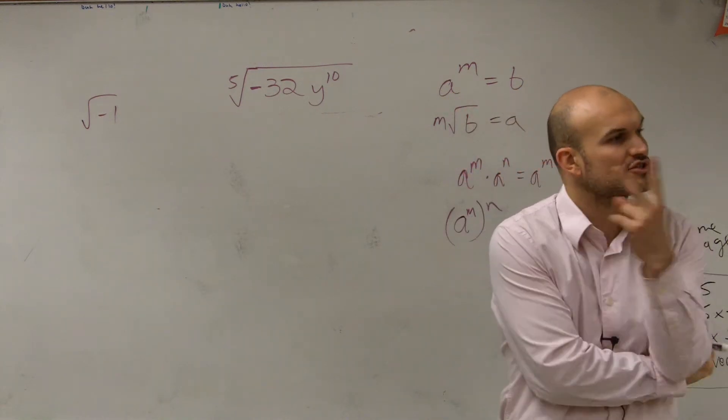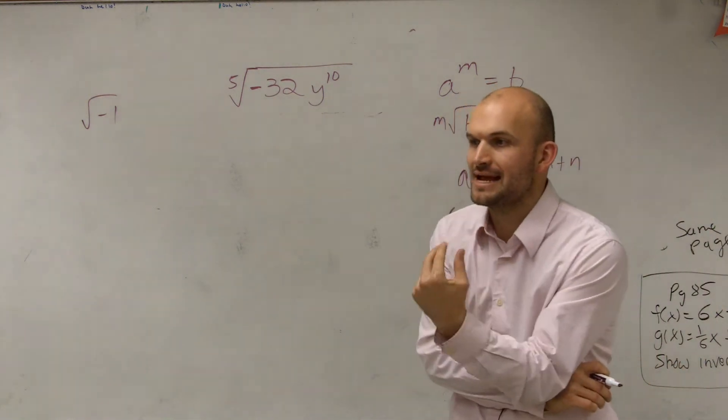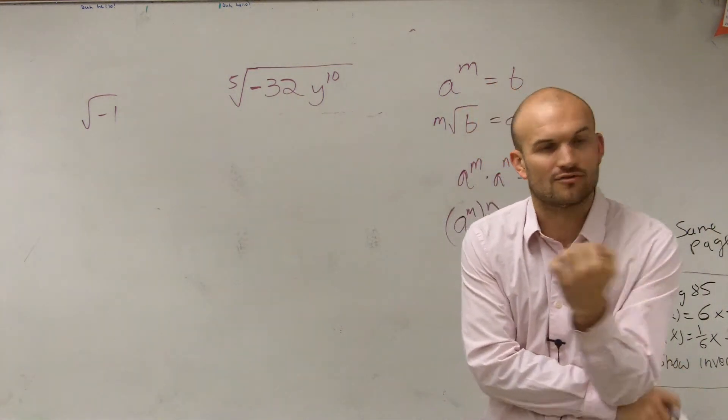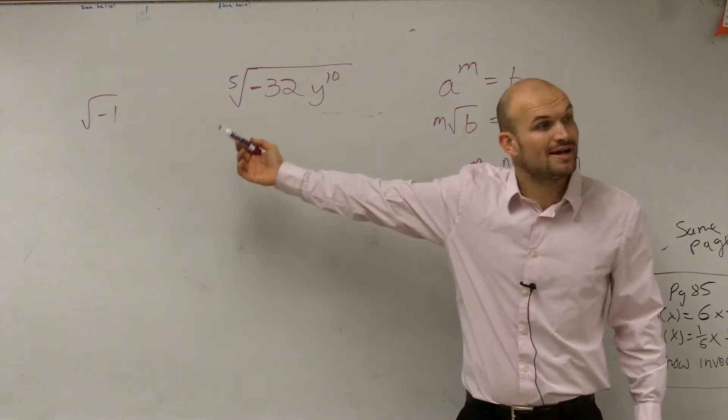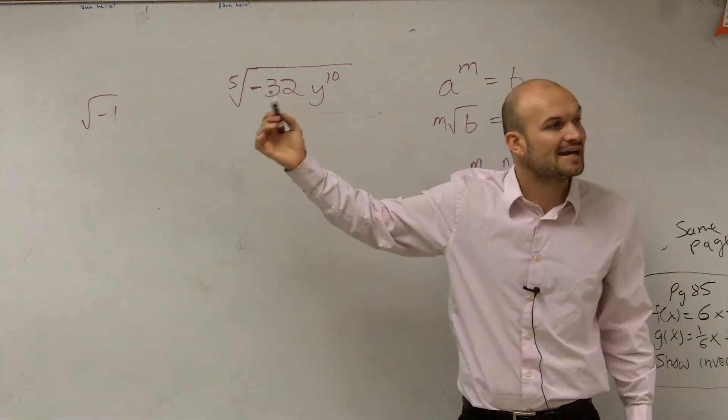But remember, that's for the square root. Square root means what number multiplied by itself. The cube root says what number multiplied by itself five times?